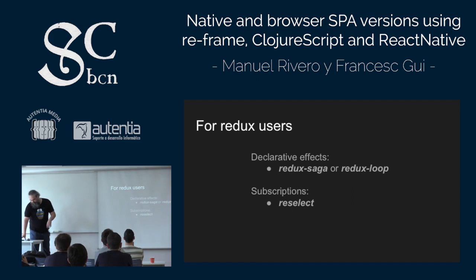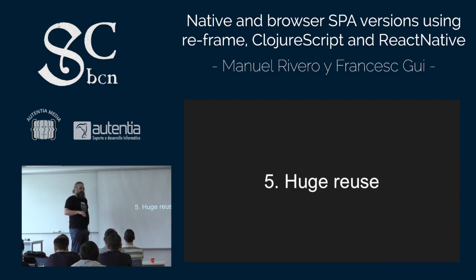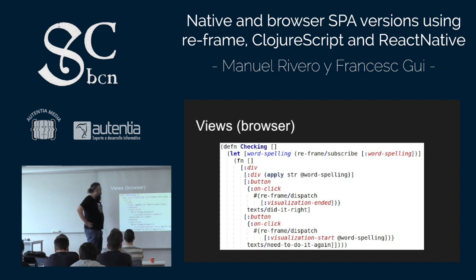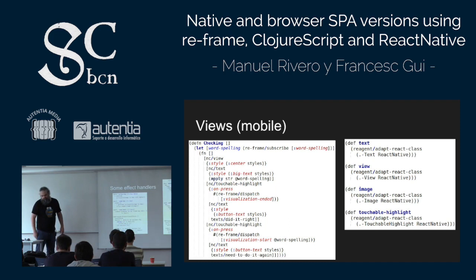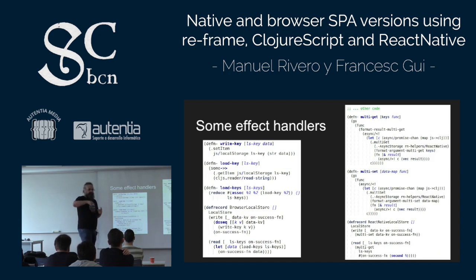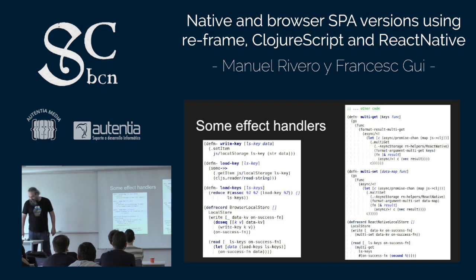The consequence of all this was a huge reuse between the mobile and browser versions, because the only things that were different were the views — and the views had no logic, just dispatching and subscribing. This is the browser version, and this is the mobile one using Expo. The events are different but dispatch to the same thing. Some effect handlers differ — for example local storage needs different implementations for browser vs React Native — but all the rest of the code is the same.